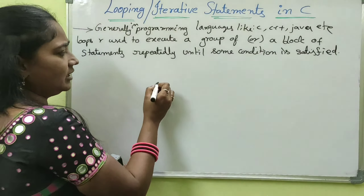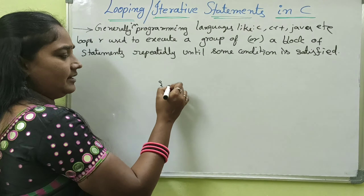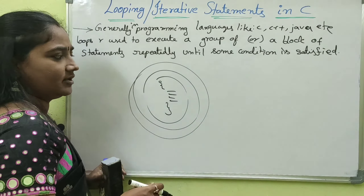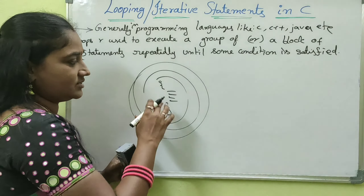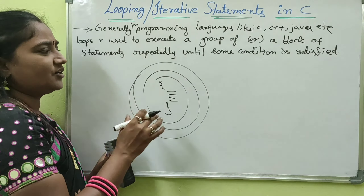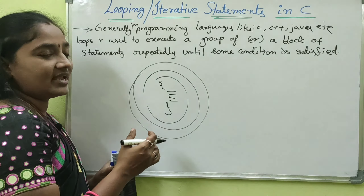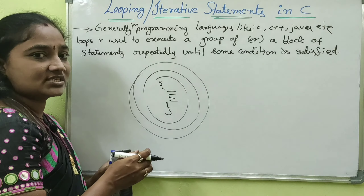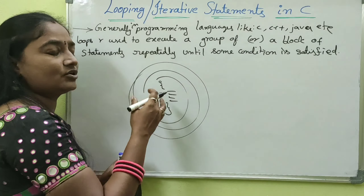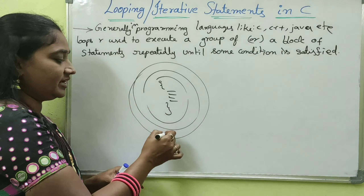A block of statements is executed repeatedly until some condition is satisfied. If we have some block of statements that needs to repeat and execute the same statement multiple times, then we will use the loop concept. We will specify a condition; when the condition is true it repeats, and when false the loop ends.